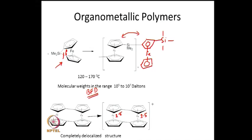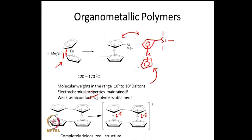The molecular weights of these molecules when linked directly to each other are reasonably small, but species like the polymeric version can be fairly large — as high as 10⁵ to 10⁷ Daltons — and still the electrochemical properties are maintained. They are weak semi-conducting polymers. These organometallic polymers are useful species, extremely valuable for electrochemically coating electrodes and in speciality applications where a conducting surface is needed.